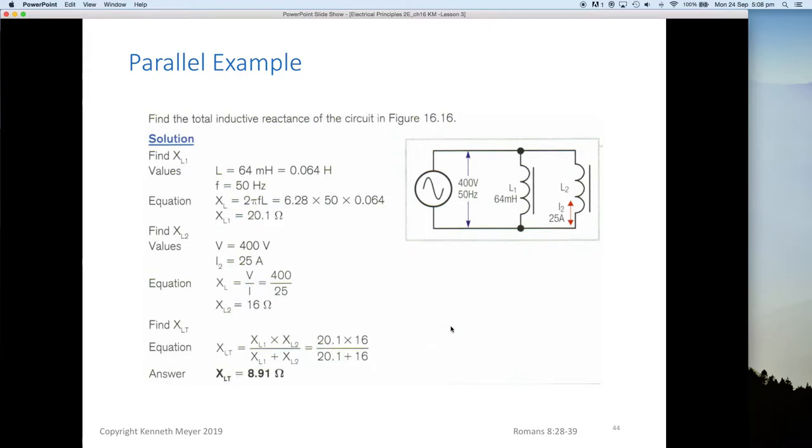One final example to finish off this part of the lesson. To find the total inductive reactance of a circuit, we have here 400 volts at 50 hertz, 64 millihenries in L1. We're told the current through I2 is 25 amps. To find XL1, we simply go 2πfL equals XL. So 6.28 multiplied by 50 multiplied by 0.64. XL1 is 20.1 ohms. We know the voltage, we want to find XL2 now, but we can use Ohm's law to find that one because we have the voltage and we have the current. So we can say 400 divided by 25. So XL2 is 16 ohms.